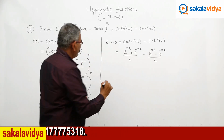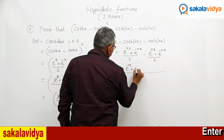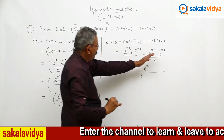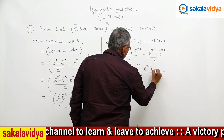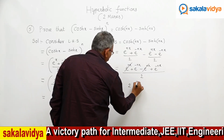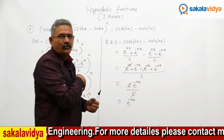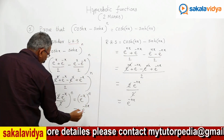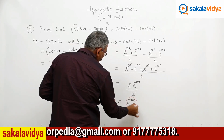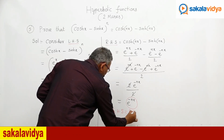Let us do the simplification. 2 is the LCM. We get e^(nx) + e^(-nx) - e^(nx) - (minus e^(-nx)). The minus into minus is a very important step, giving plus e^(-nx). The e^(nx) terms get cancelled, and we have e^(-nx). Now we observe: LHS equals e^(-nx) and RHS equals e^(-nx). Therefore, we conclude that LHS equals RHS. Hence it is proved.